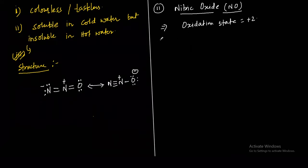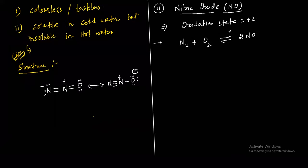It is prepared by the direct combination of nitrogen and oxygen in an electric arc. We use the electric arc because N₂ and O₂ do not combine at room temperature — it requires a very high temperature on the order of 3000 degrees Celsius. The electric arc produces that very high temperature needed for this reaction.